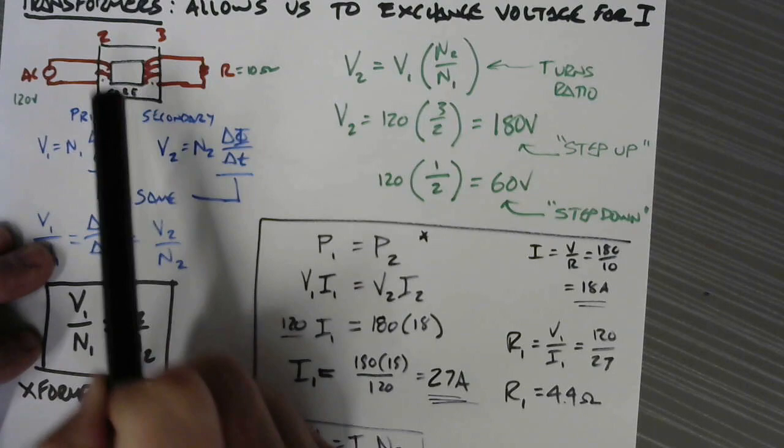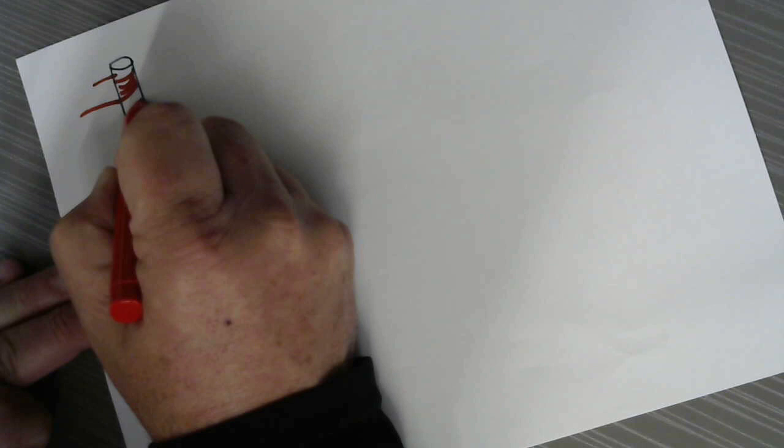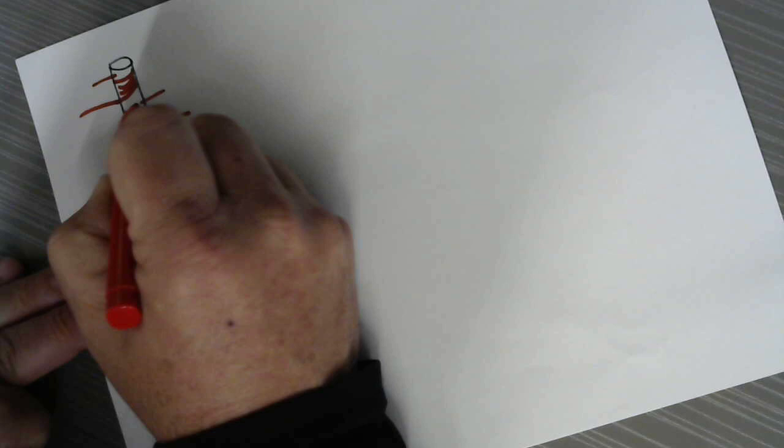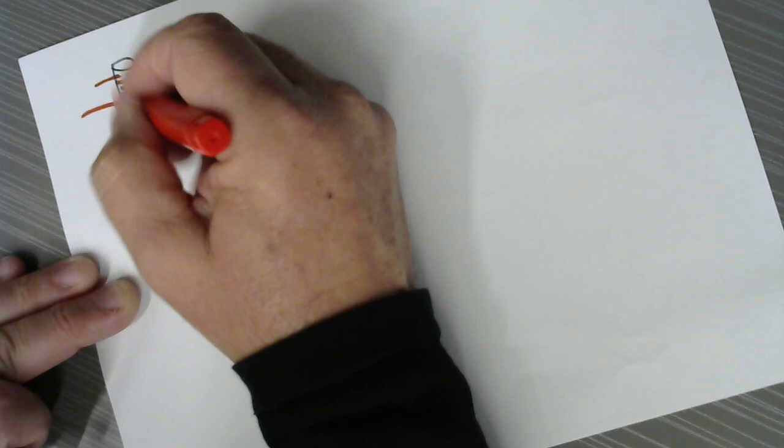So in practice, most transformers are built coaxially. That is to say that we would have one piece of iron and we would either wrap the primary around the top and the secondary - let's have that go behind and then come across this way. There's dotted lines back here. So the primary would be up top and the secondary be on the bottom. That way the magnetic field doesn't have far to go.